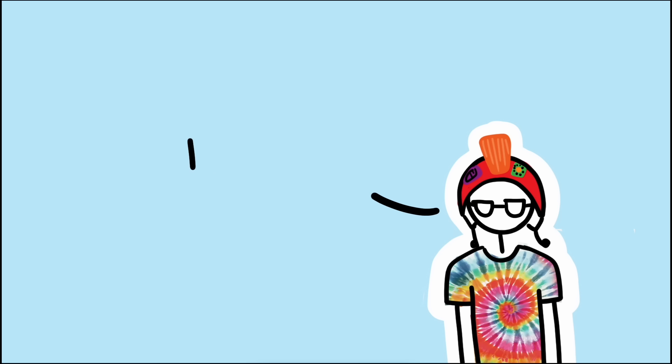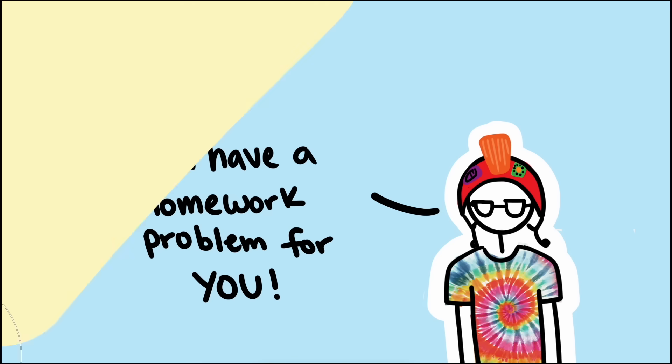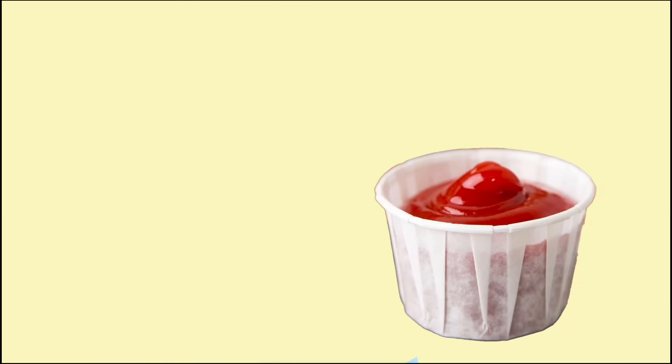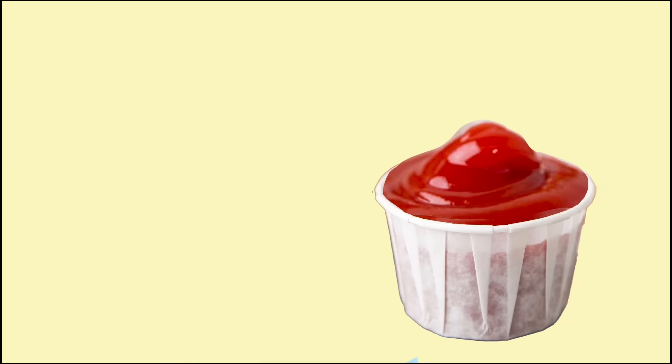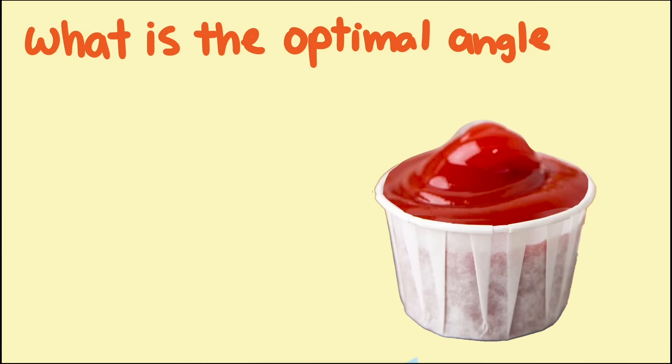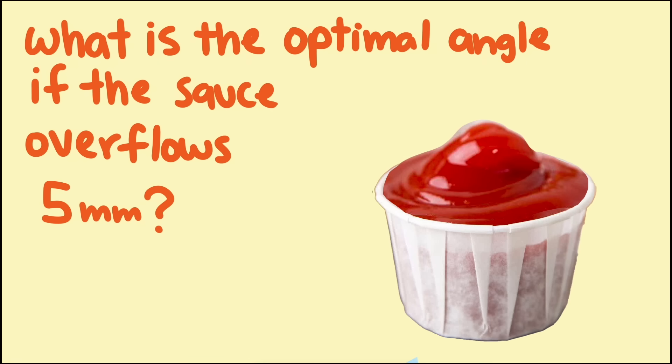Now, for those true math enthusiasts that have stuck around to the end of this video, I have a homework problem for you. All along, we've been assuming that the sauce goes just to the top of the rim. But those thick sauces can actually go much higher than the rim. What's the optimal angle if we fill the sauce to its max over-the-rim level, say, 5 millimeters over the rim? Both the techniques we've shown in this video can help jumpstart you on this problem.